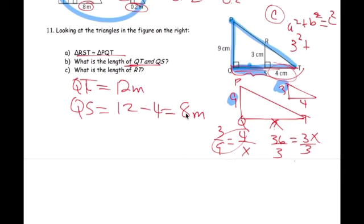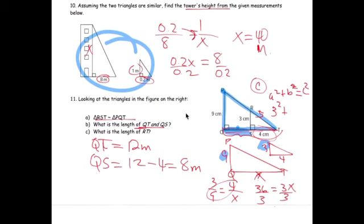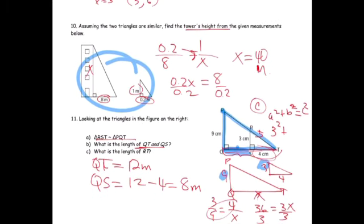And r to t, if you do it, it should be 5. All right, Pythagorean theorem. Hope that's helped. All right.